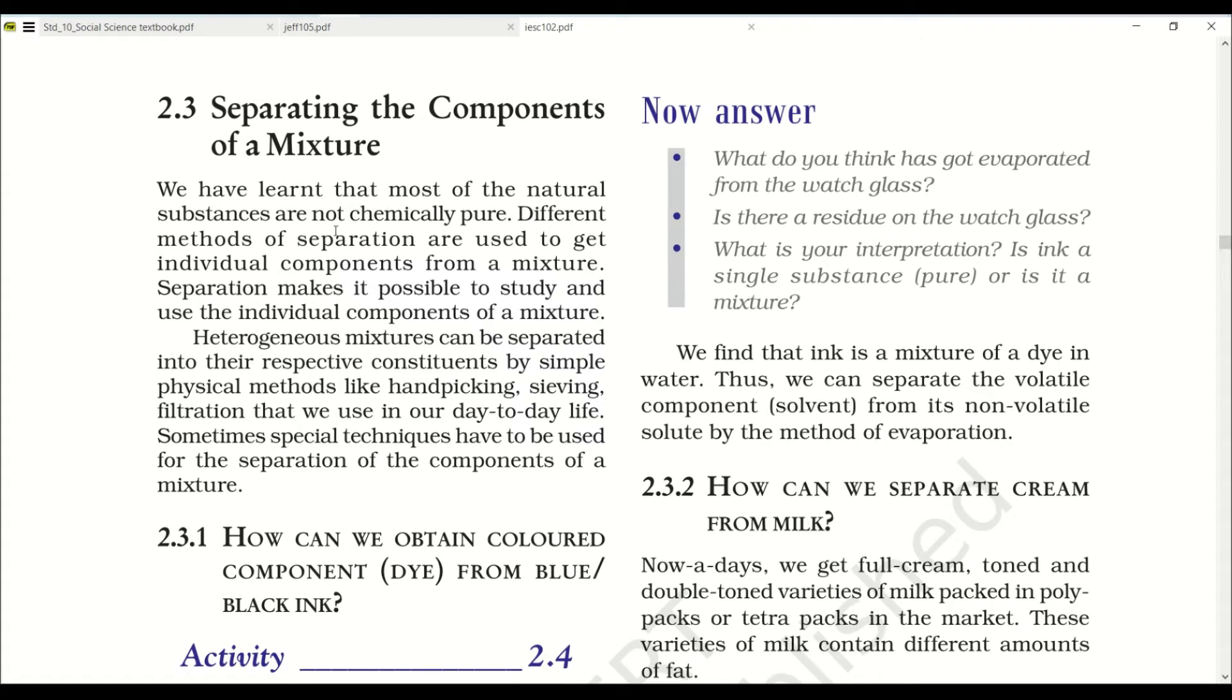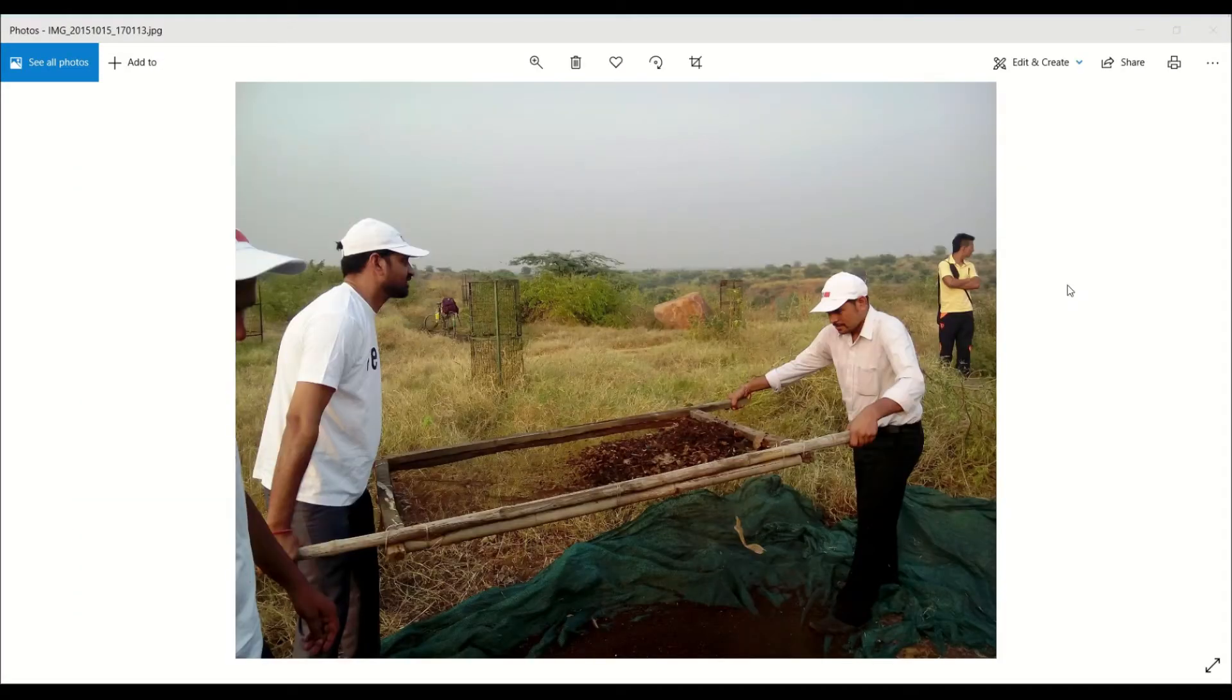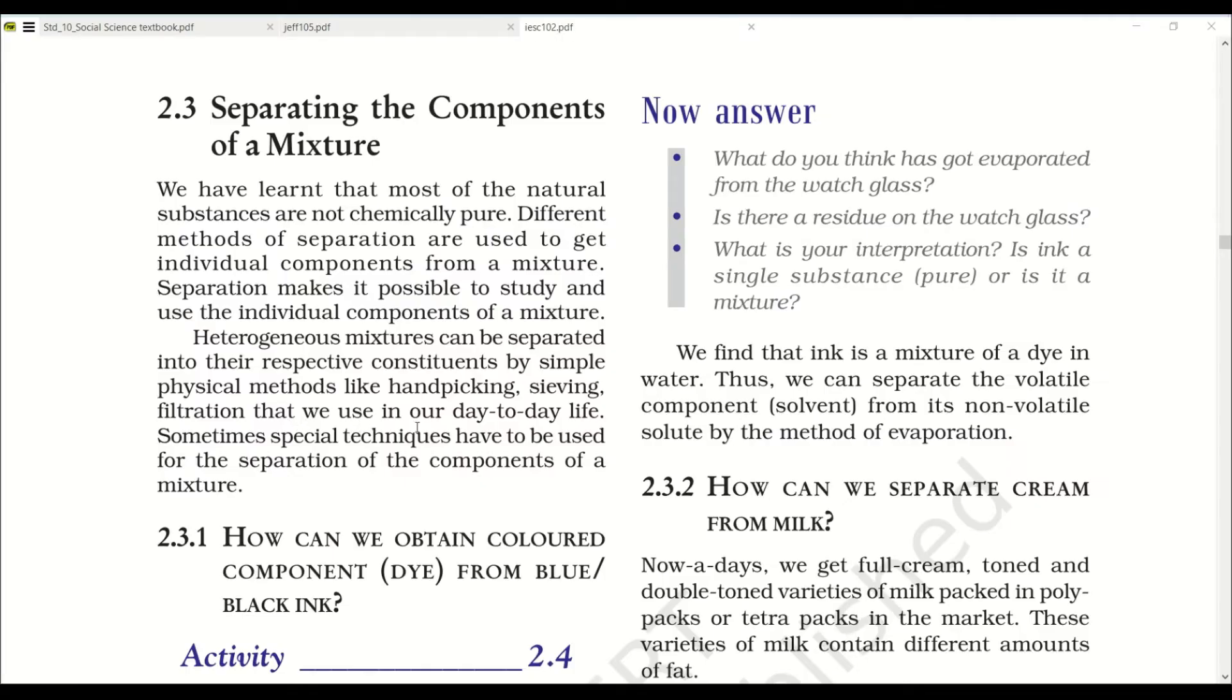We have learned that most natural substances are not chemically pure. Different methods of separation are used to get individual components from a mixture. Heterogeneous mixtures can be separated into their respective constituents by simple physical methods like hand picking, sieving, filtration that we use in our day-to-day life. Sometimes special techniques have to be used for the separation of components.